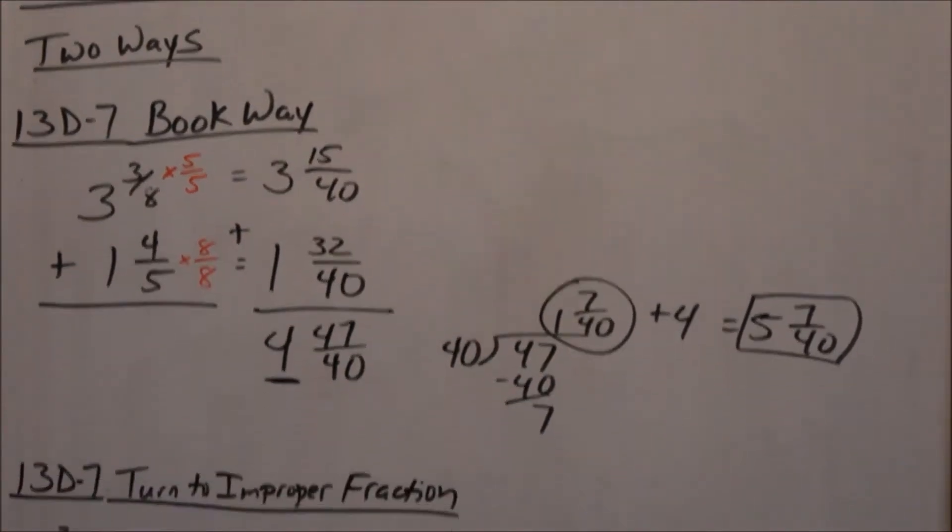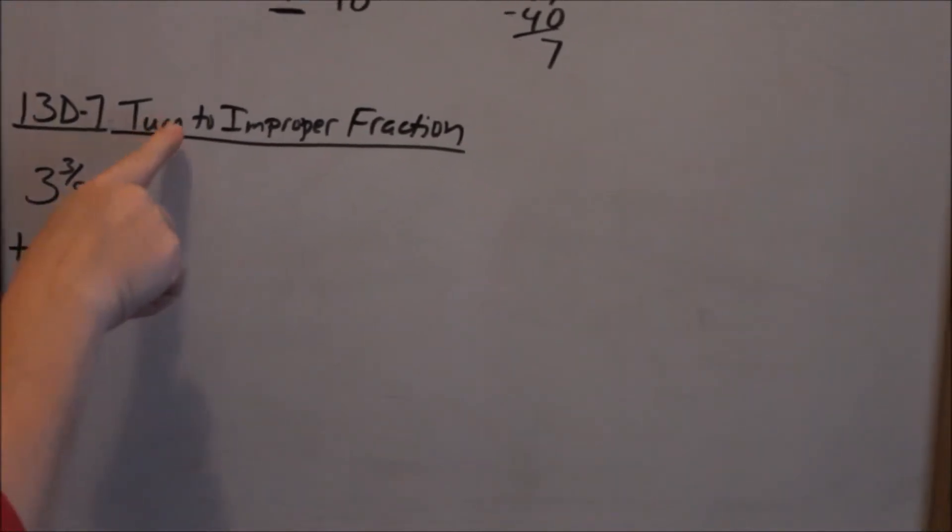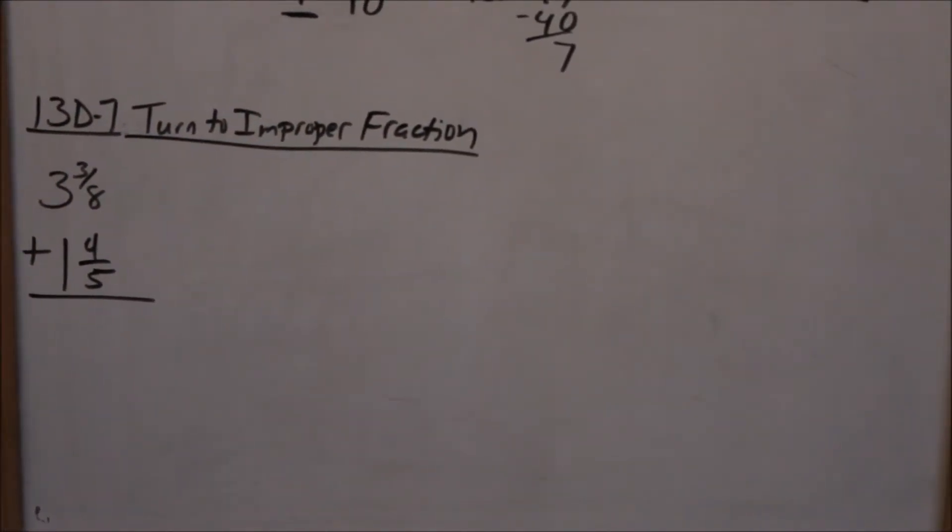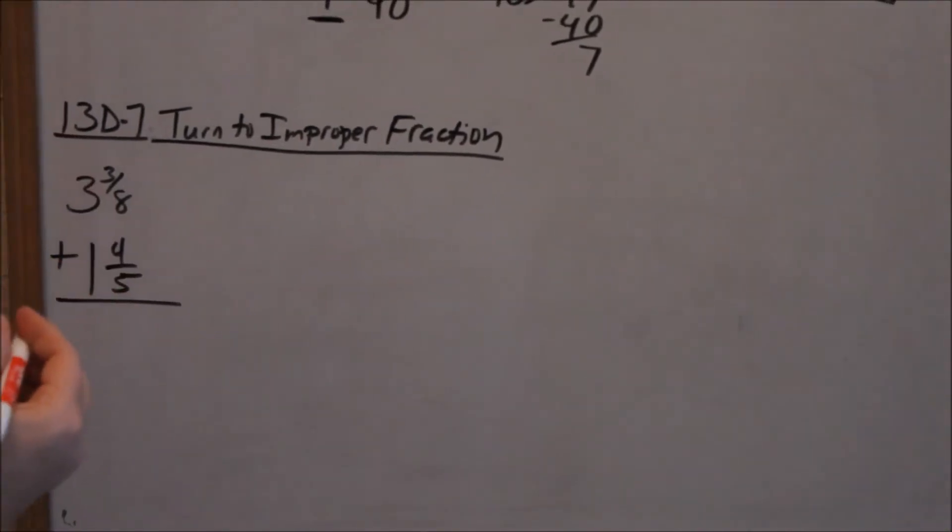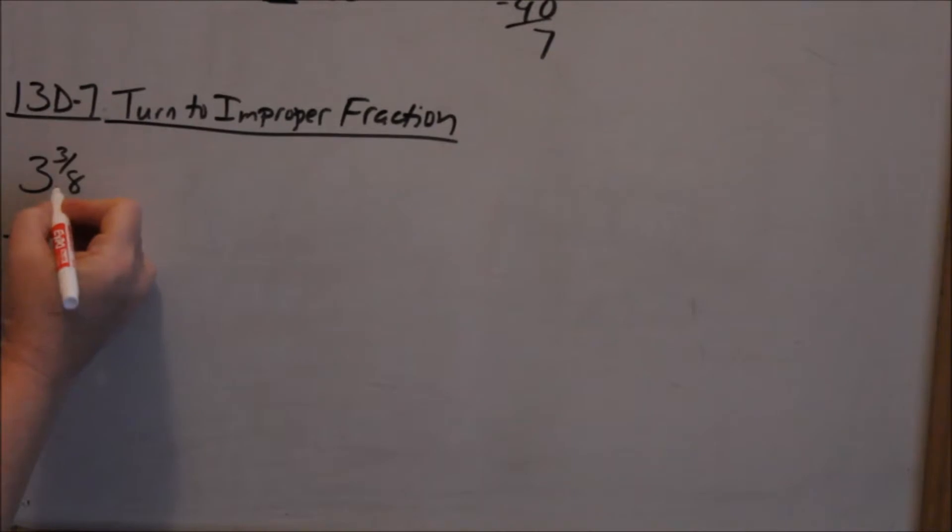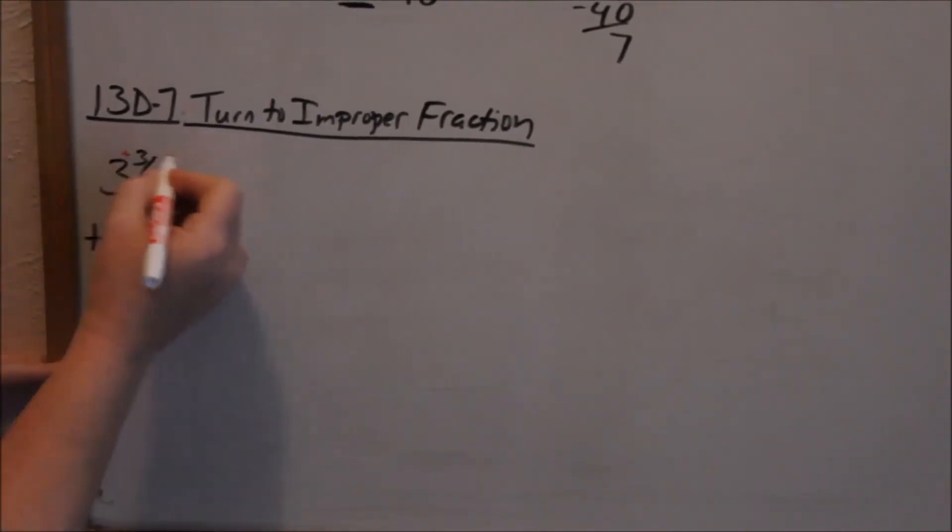So I'm going to do the same problem again, but the second way I'm going to do it is to turn these into improper fractions. Personally, I like this way the best, especially when it comes to subtracting fractions. Turn both of these into improper. Remember when you turn them to improper, you're multiplying these two numbers here, then you're adding that top one there.